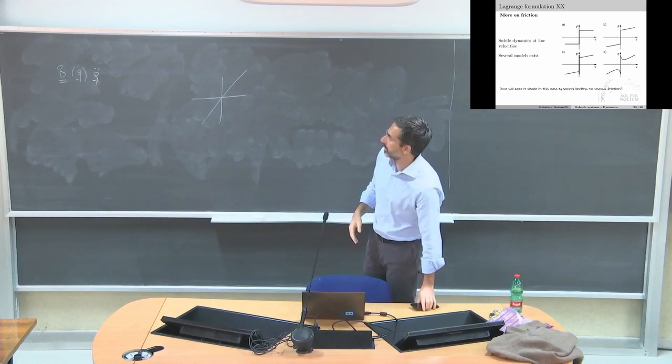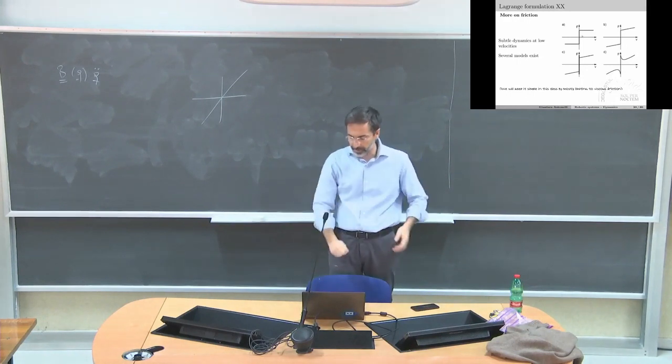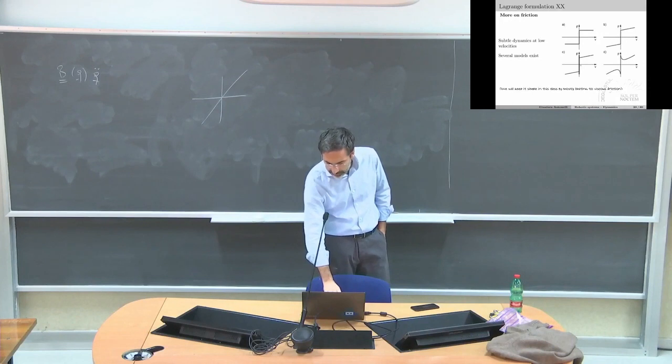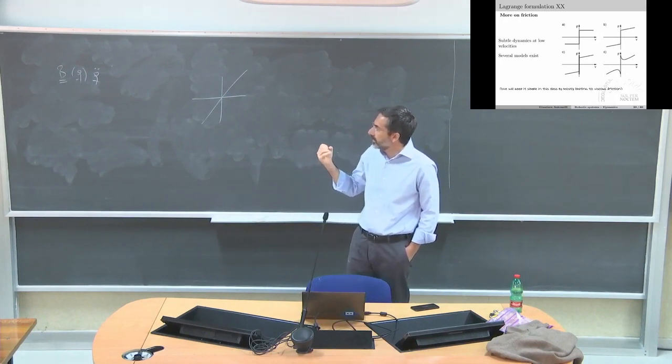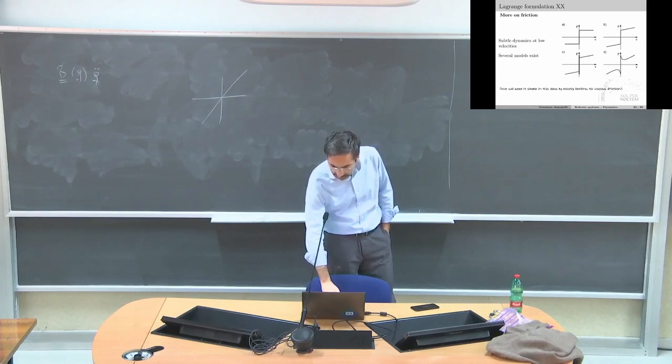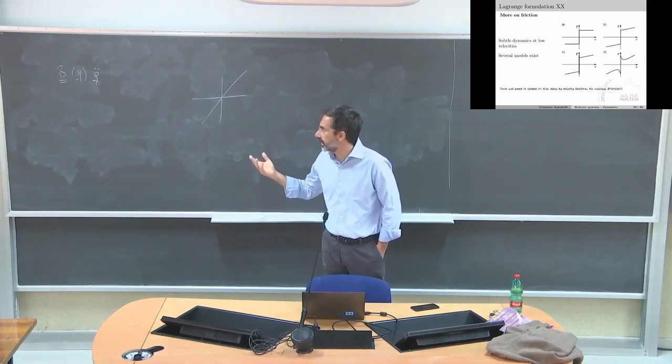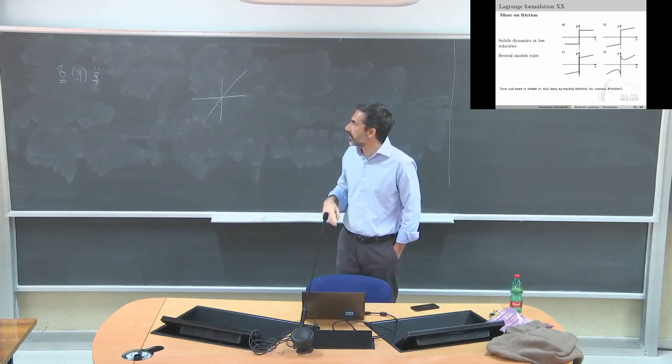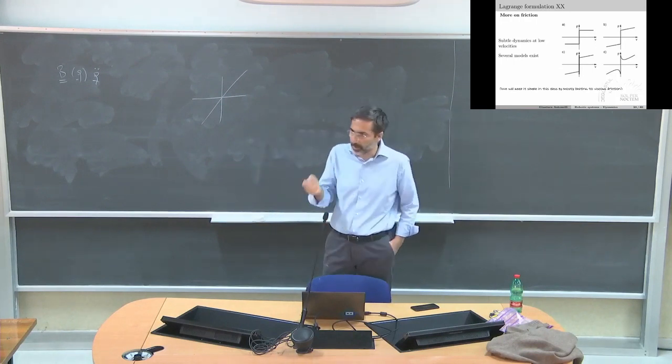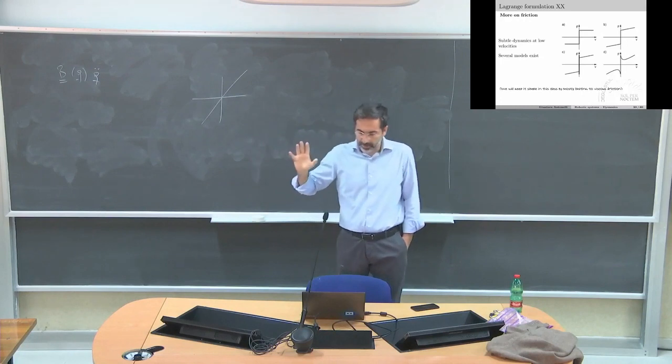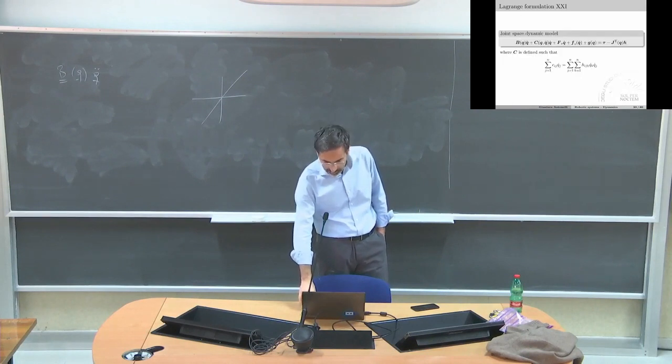At very low velocities - if this is the velocity of two surfaces - at very low velocities you can have different models. The difficult aspect is that sometimes this is a very low velocity that you don't measure at all. For example, the temperature, the local temperature. We are going to ignore the fact that friction is a more complex phenomenon.